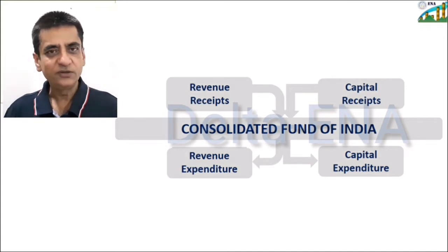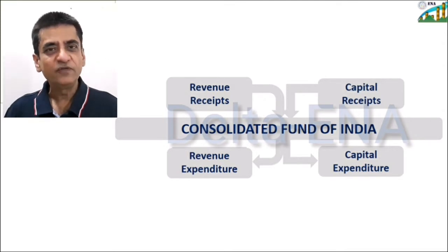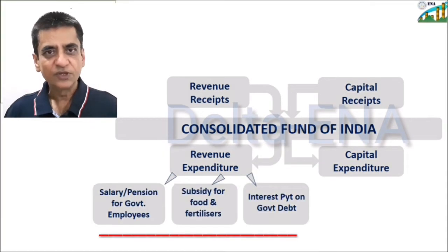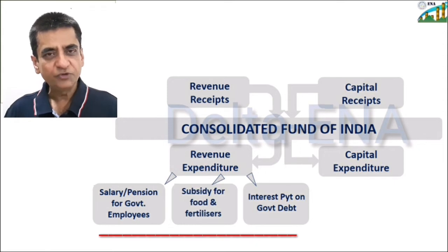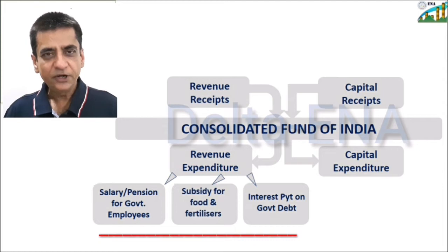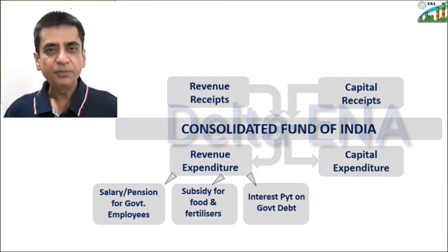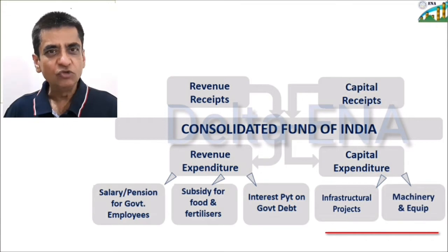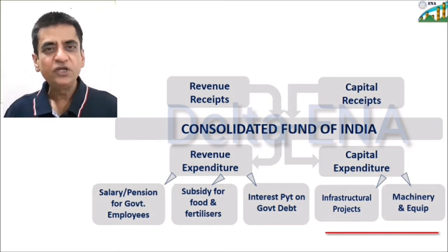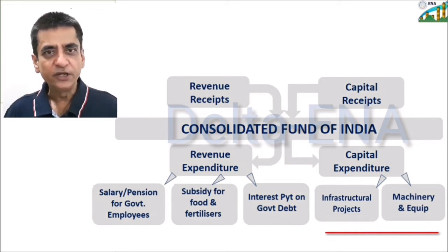Starting with revenue expenditure — it is recurring in nature and from the government's point of view, it is further divided into three parts: salary and pension to government employees; second, subsidy on food, fuel and fertilizers; and third, interest payment on government debt. Capital expenditure, which is non-recurring in nature, is further divided into expenditure on infrastructure projects and expenditure on machinery and equipment, mainly defense equipment.